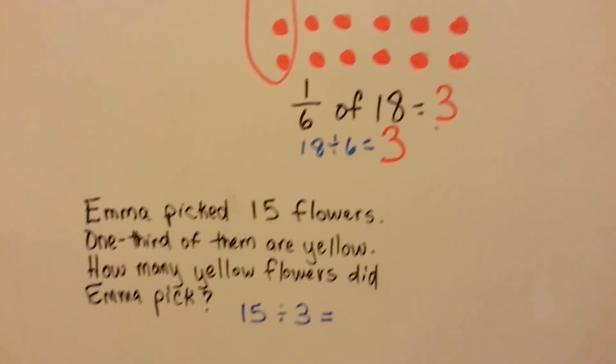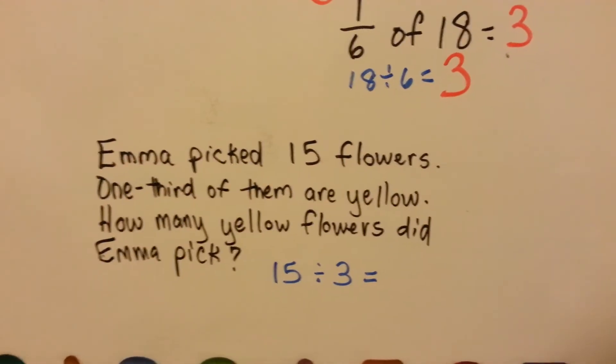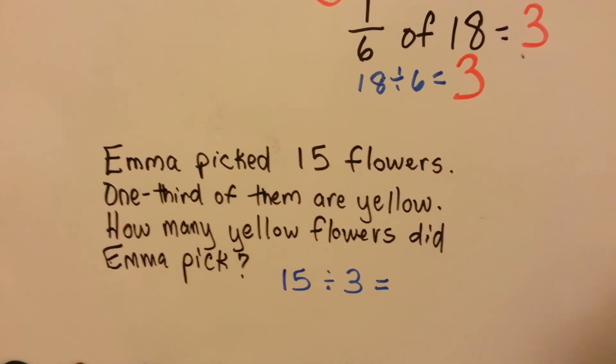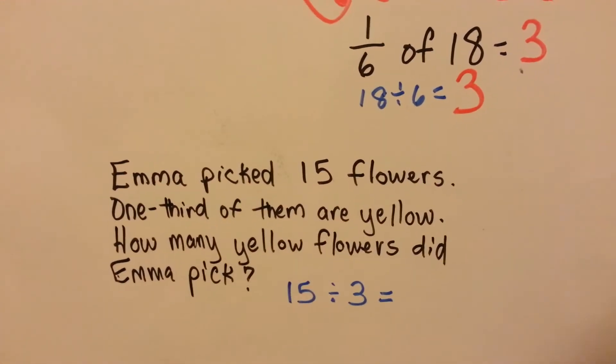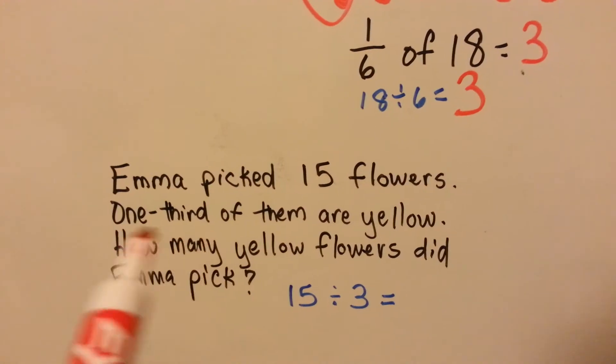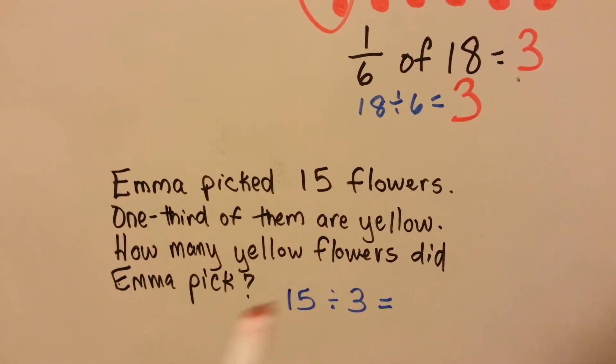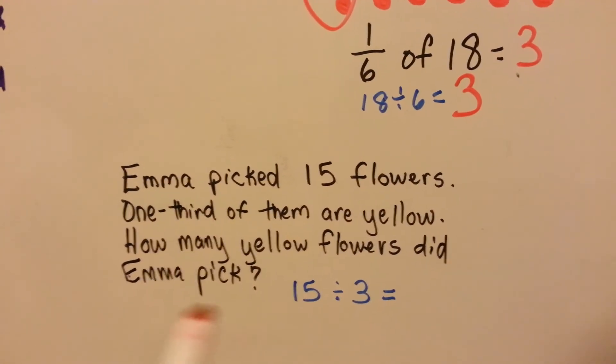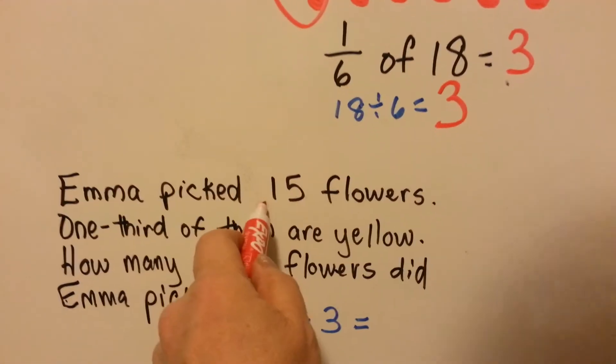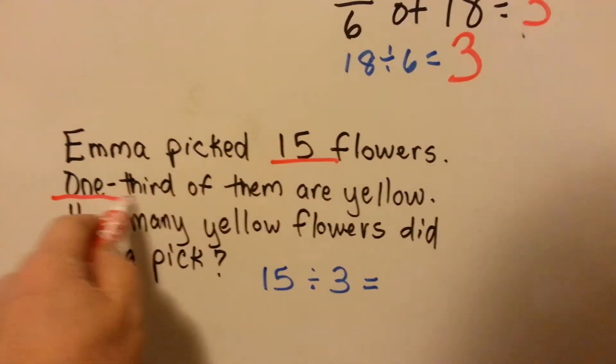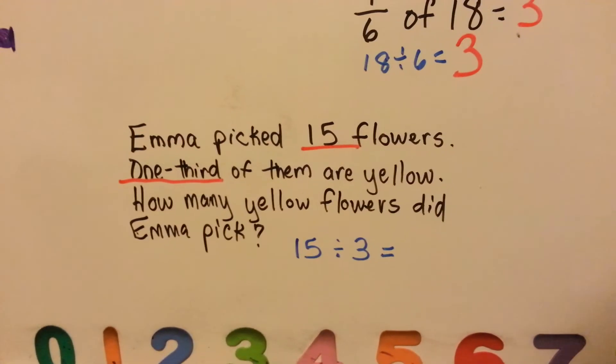So now I've got a little word problem for you, and we'll use division to solve it. Emma picked 15 flowers. 1 third of them are yellow. How many yellow flowers did Emma pick? So we know 15 is important in the word problem, and 1 third is important in the word problem.